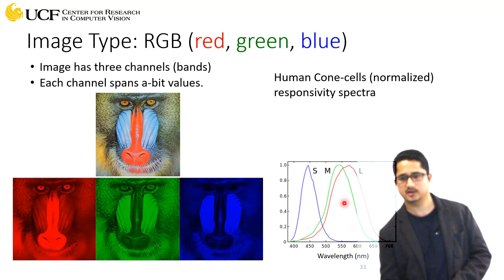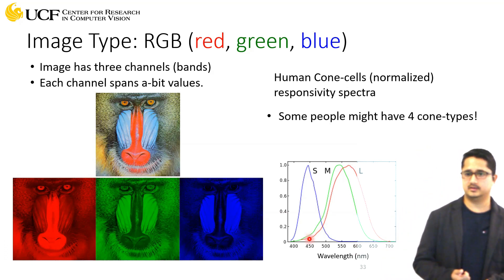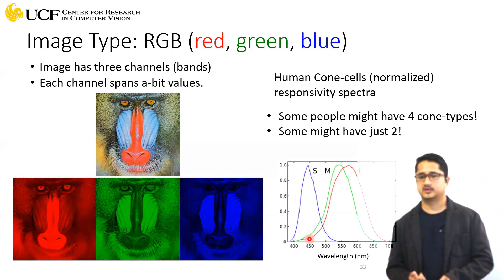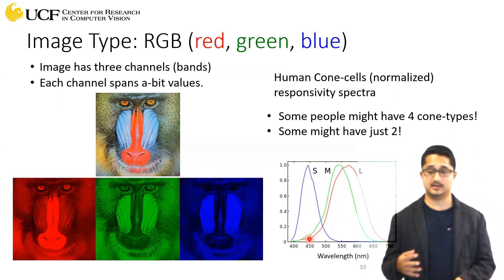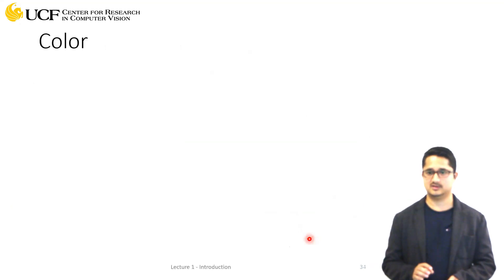Light has a wavelength. This is an interesting fact: some people might have four cone types, meaning they can see more colors. Some might have just two, meaning fewer colors.